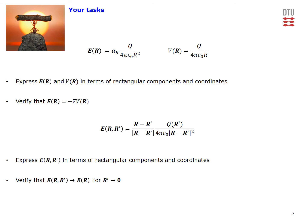We have essentially completed everything in this video problem one, but we also have a few tasks for you. For a point charge at the origin, express both the electric field and the potential in rectangular components and coordinates, and verify that the electric field equals the negative gradient of the electric potential. For the displaced point charge, express the electric field in rectangular components and coordinates, and verify that it reduces to the field for a point charge at the origin when r' goes to zero. Thank you very much for your attention.